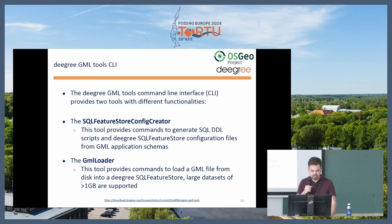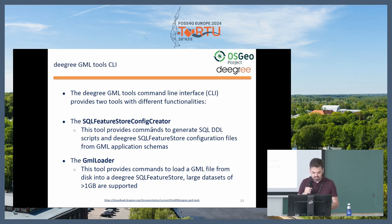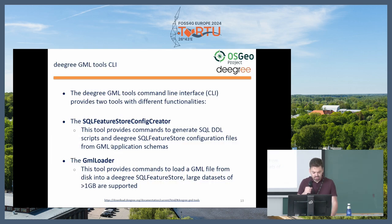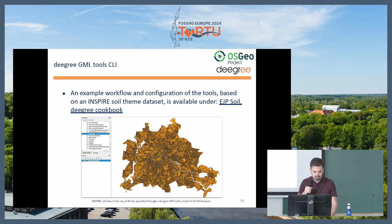We also have a command line tool. This is very useful for publishing Inspire data, as it has two key functionalities. The SQL Feature Store Configurator generates Degree configuration automatically from a GML application schema — which is very useful for Inspire schemas. The GML loader lets you load data from a large GML file into Degree. We also have a cookbook showing how the command line interface can be used, which was produced together with an Inspire project.